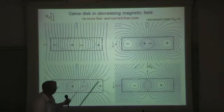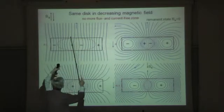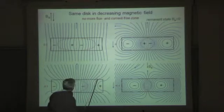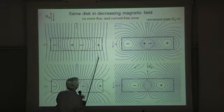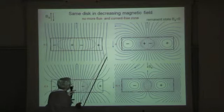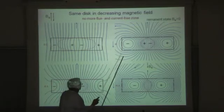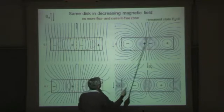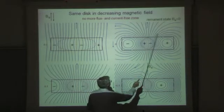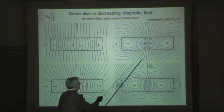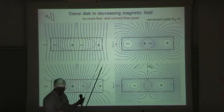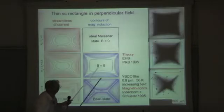And now you go back again with the applied field. You decrease it and then the current will have this form. And when you are at the remnant state, when the applied field is zero, you have just behavior as if you had a circulating current. Like the current in the ring, it has a similar magnetic field. These are magnetic field lines. So all this can be calculated directly on a PC.